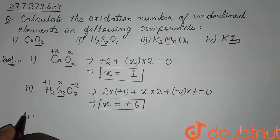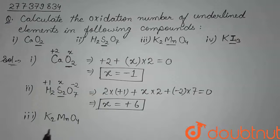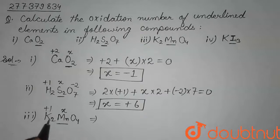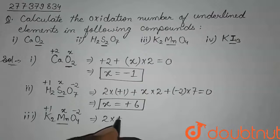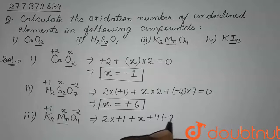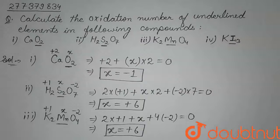Now in the third compound, K2MnO4, we have to find the oxidation state of Mn. Let's suppose the oxidation state of Mn is X. The oxidation state of potassium is always +1 because it belongs to the alkali metals, and the oxidation state of oxygen is -2. Therefore: 2 × (+1) + X + 4 × (-2) = 0. On calculating this, we get X = +6. So the oxidation state of manganese in K2MnO4 is +6.